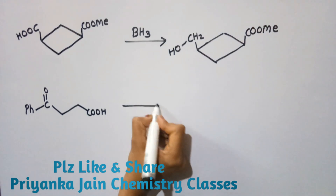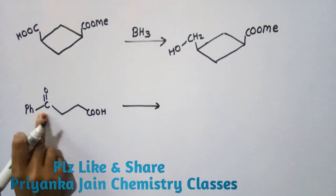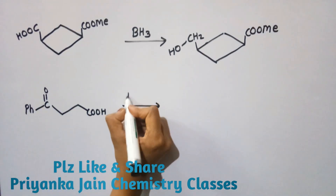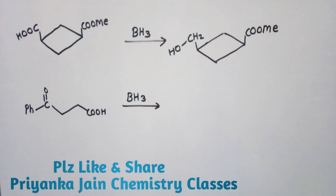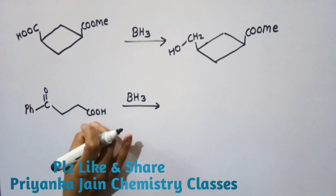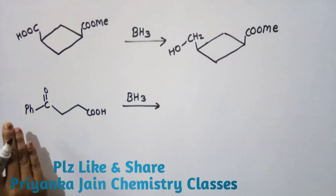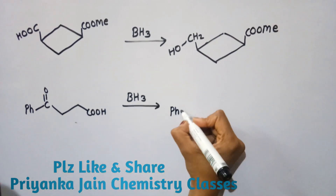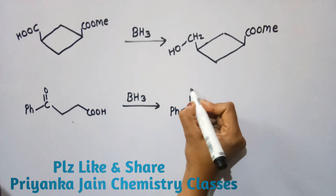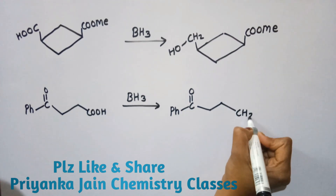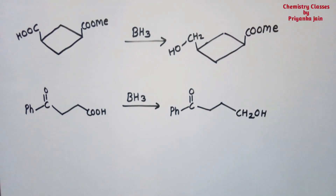Another example: in this compound there is a ketone group and a carboxylic acid group. We treat it with boranes. As before, the carboxylic acid group is electron-rich and gets attacked by boranes, while the ketone remains untouched. In the product, the ketone remains as it is, and the COOH group is converted to the alcoholic CH2OH group.